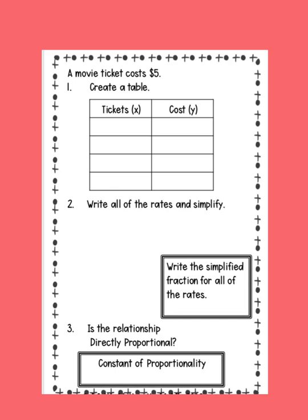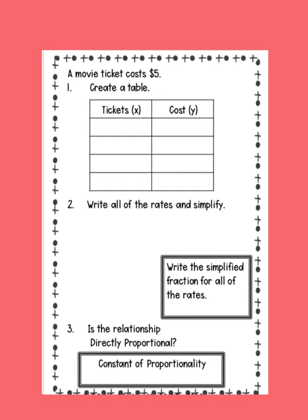So let's talk about this example. A movie ticket costs $5. So the number of tickets is proportional with the price that you're going to pay. If I get one ticket, it's going to cost $5, right? So if I have one ticket, that's $5. What if I had three tickets? How much would that be? $15. What if I had four tickets? That'd be $20. What if I had 10 tickets? That would be $50.